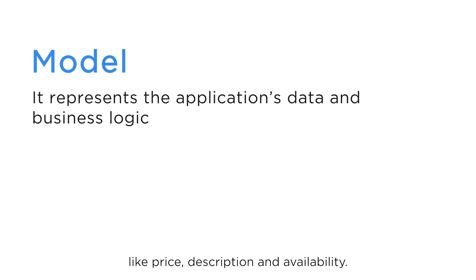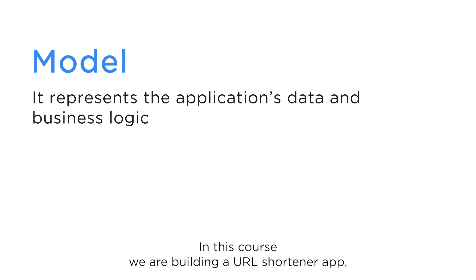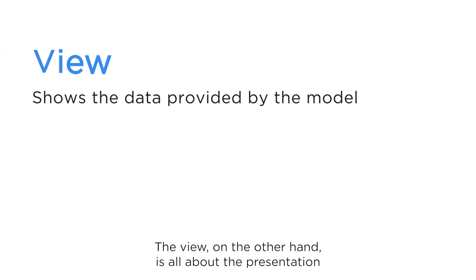For example, if you are building an e-commerce application, your model would include product objects with properties like price, description, and availability. In this course we are building a URL shortener app, so our model would include URL objects with properties like the original link, the shortened link, and the number of clicks.